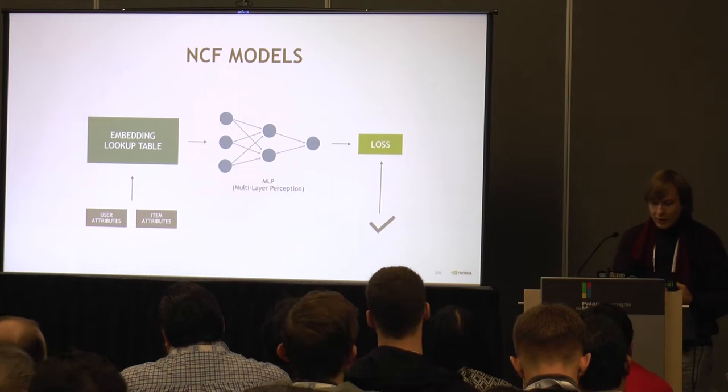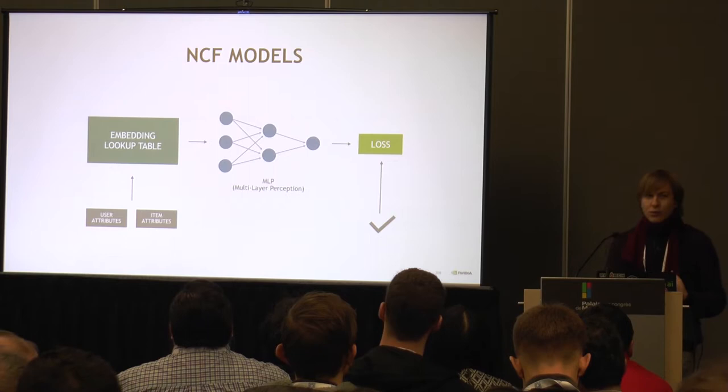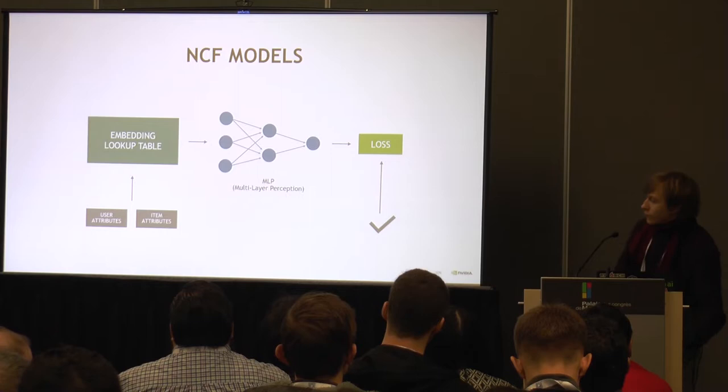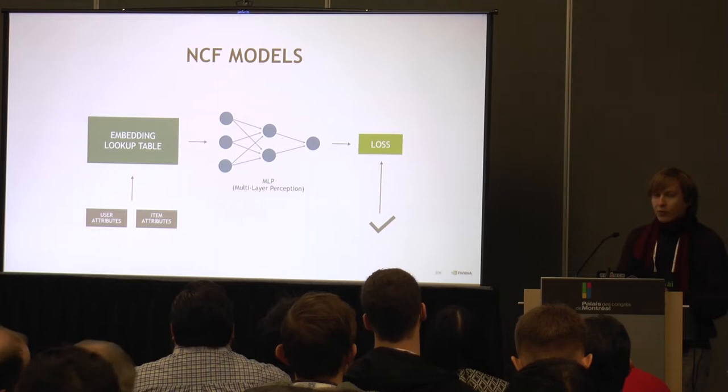All this context definitely helps with the cold start problem. But in general, it might also raise accuracy. The network is essentially trained on samples of a user observing an item, which may or may not lead to an interaction.